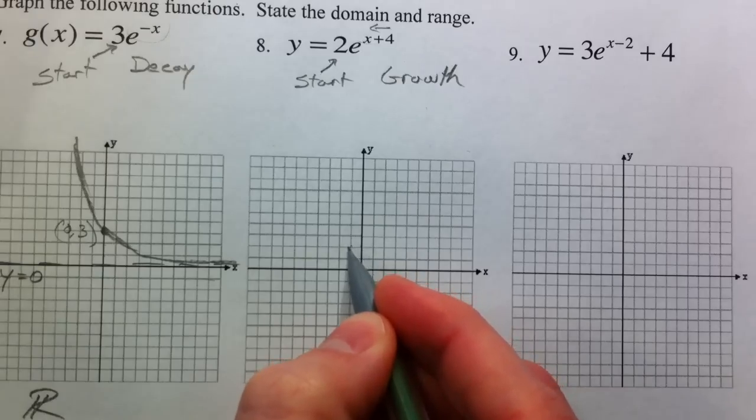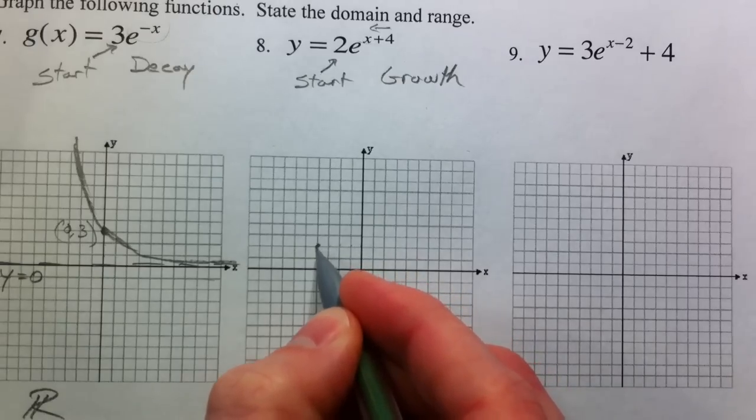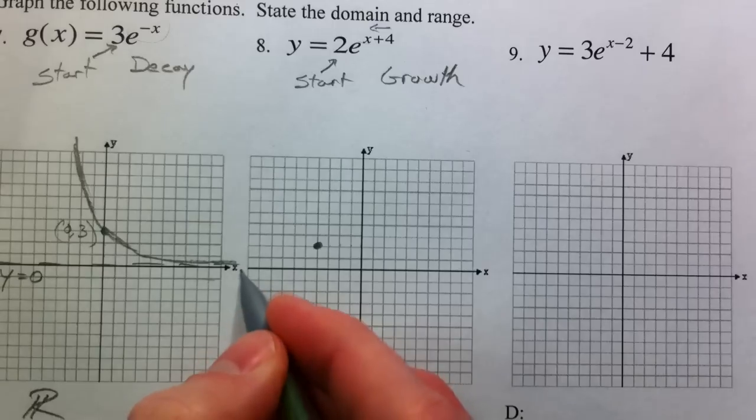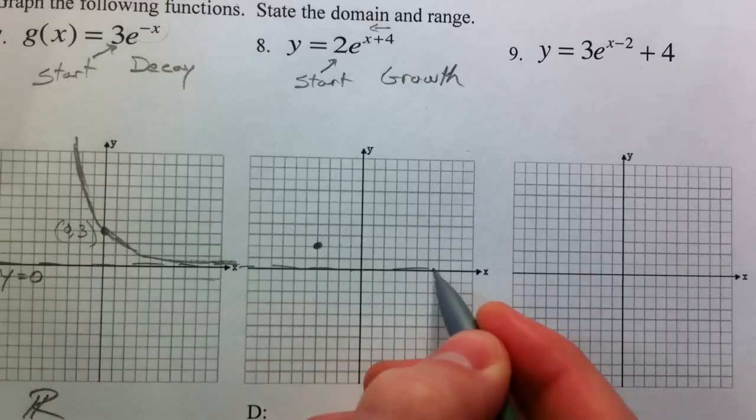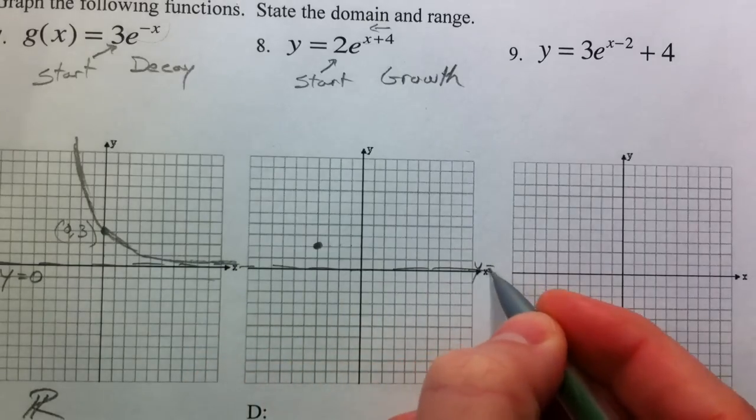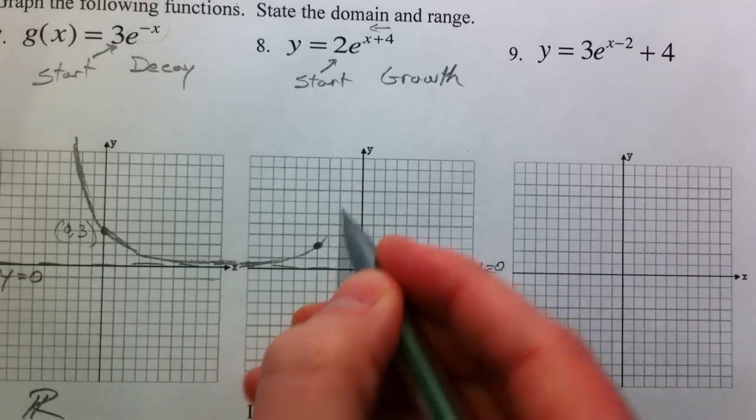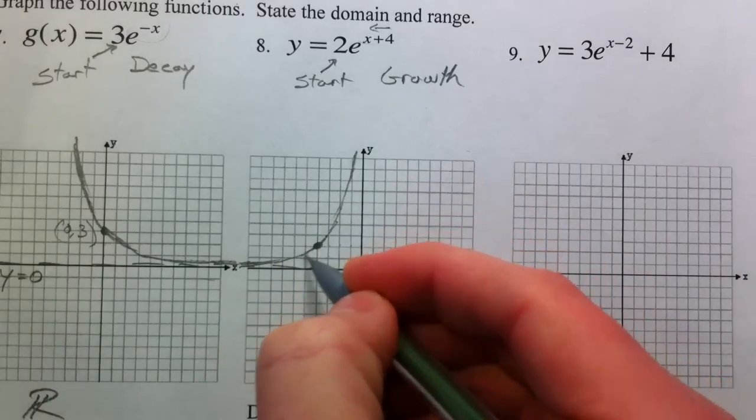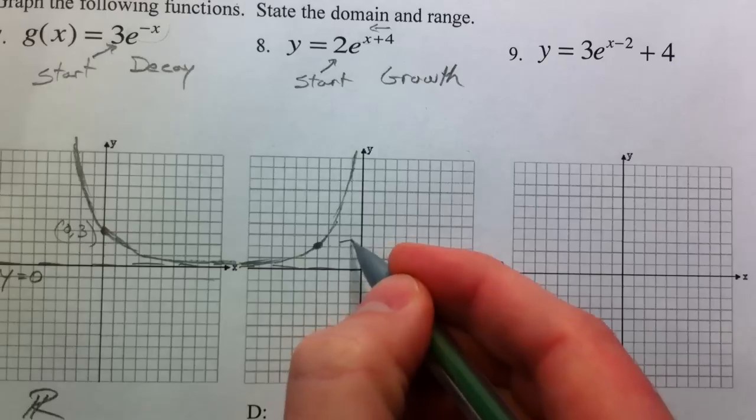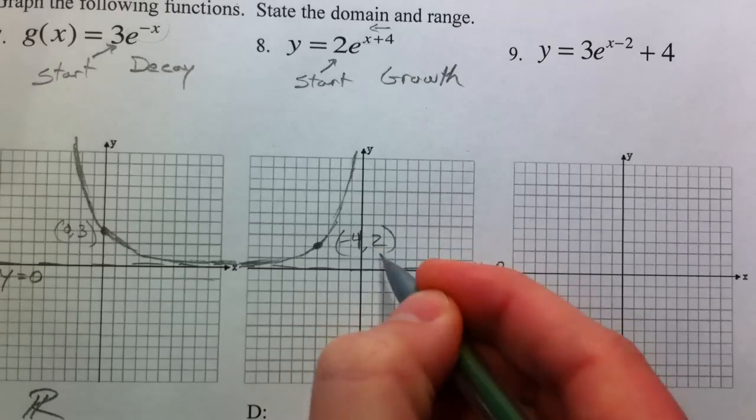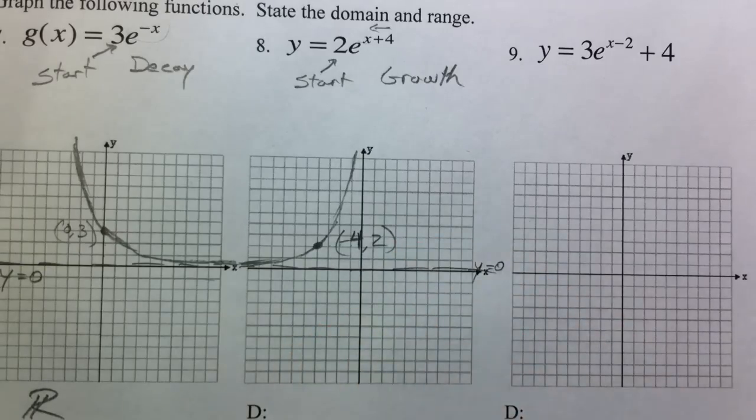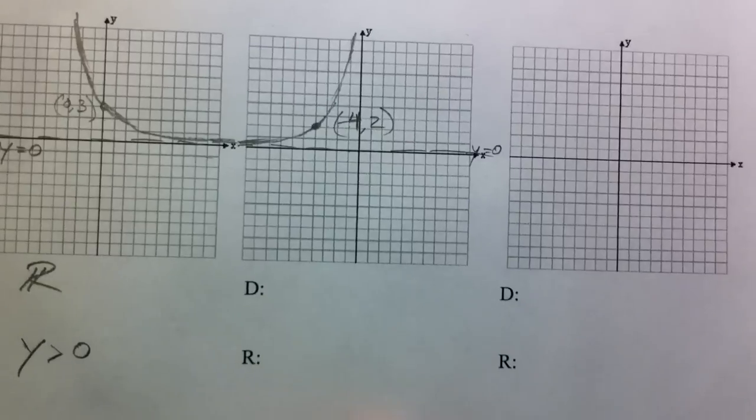And so even though this 2 was our starting value, it's going to shift 1, 2, 3, 4 to the left. Our horizontal asymptote is still y equals 0, and now it's going to grow. Negative 4 comma 2.